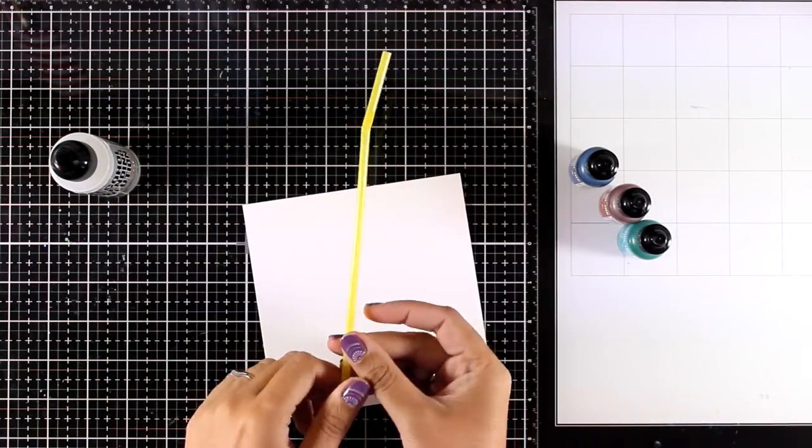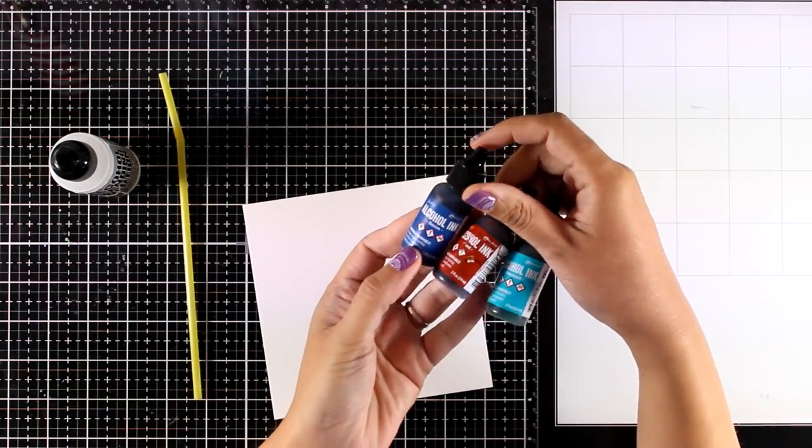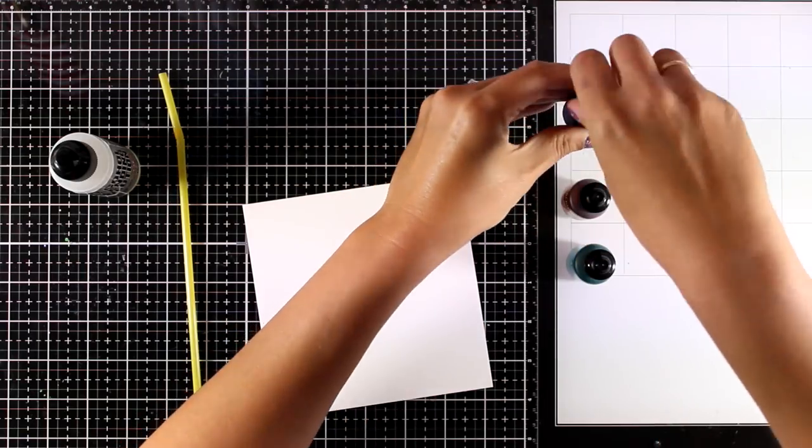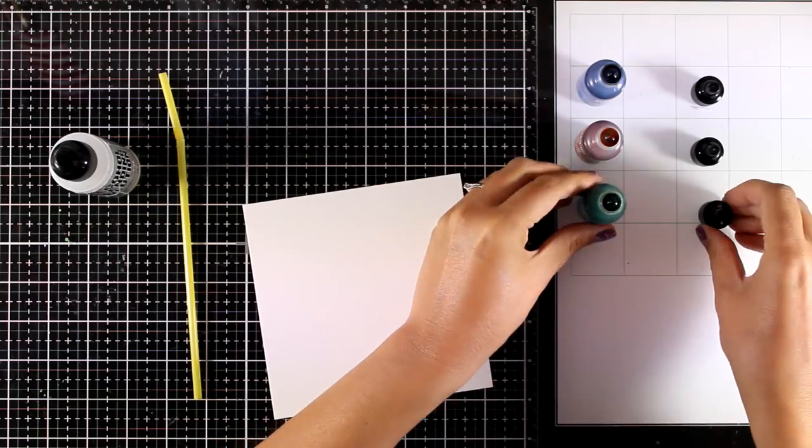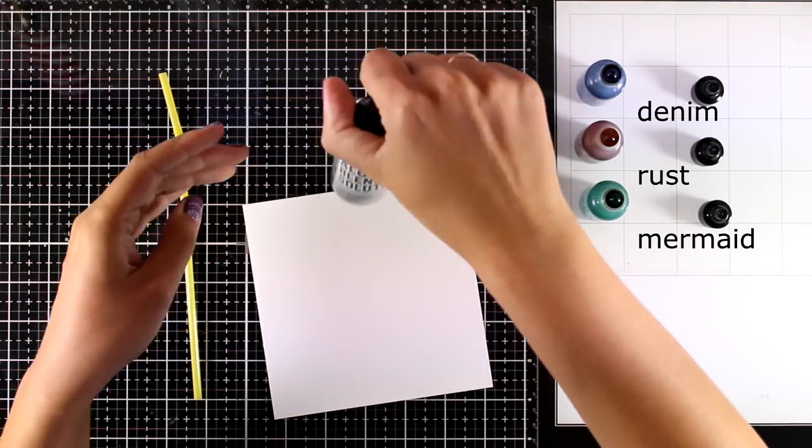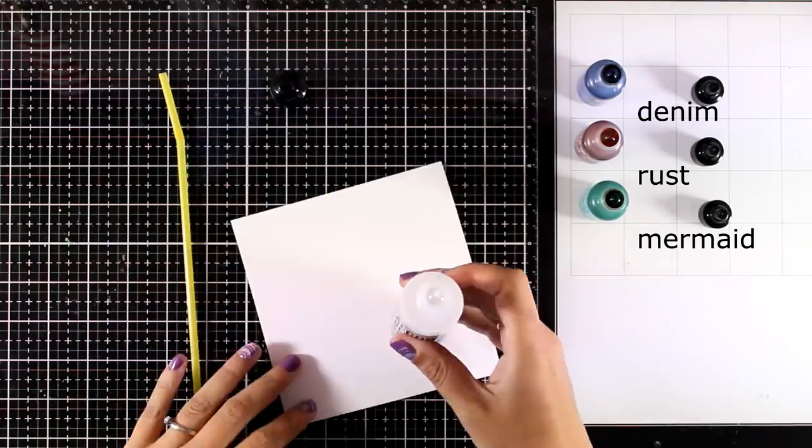And now it's time to have some fun. On my yupo paper I am going to use my blending solution, a straw because that's the technique that I absolutely love. I'm also going to use three different alcohol inks and you can see the colors that I'm using on your screen right now.